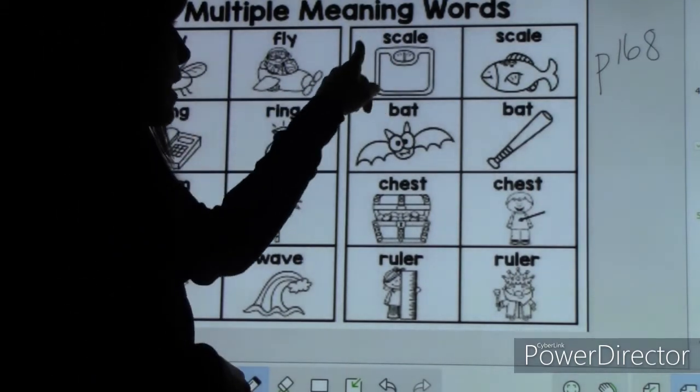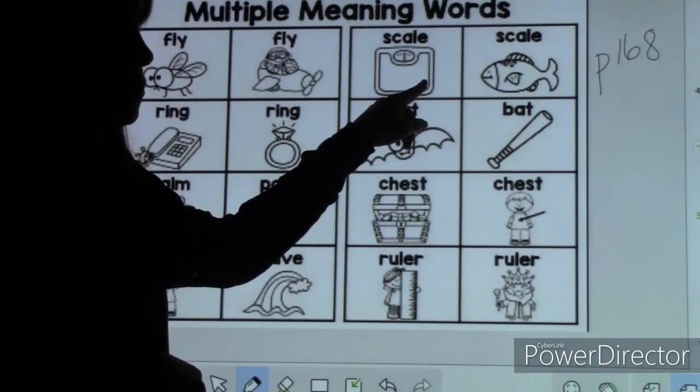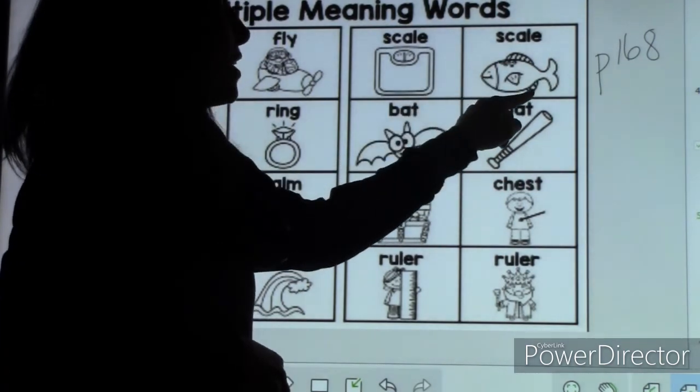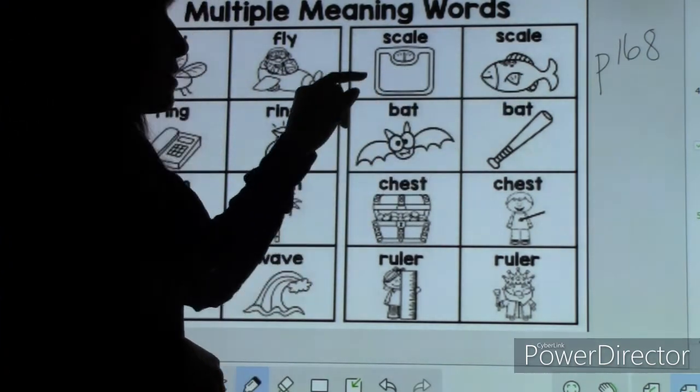Then we have scale, like a scale you step on or a scale you weigh your groceries on. And scale, like a fish, is covered with tiny scales.